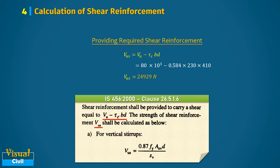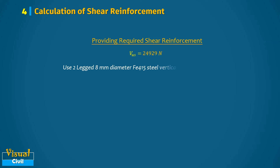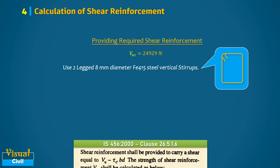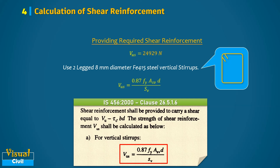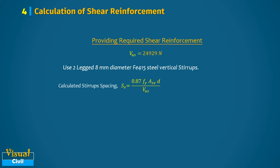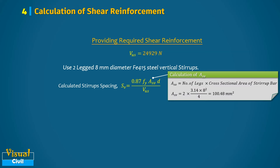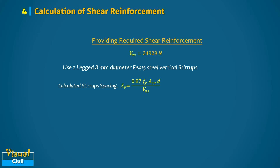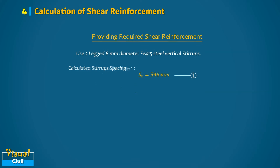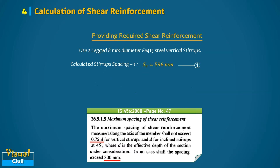Taking a two-leg stirrup of 8 mm diameter bar as the vertical shear reinforcement, the spacing of the stirrup is calculated using the equation in Clause 26.5.1.6. The value of A_sv is determined by multiplying the number of legs by the cross-sectional area of the stirrup bar, yielding 100.48 mm². Substituting all values into the equation gives the first stirrup spacing value of 596 mm.